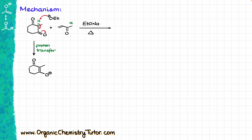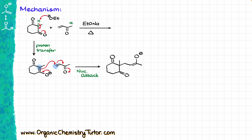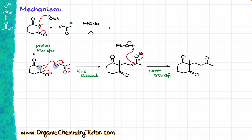This enolate is a perfect Michael donor, so we are going to bring our alpha-beta unsaturated compound and have a reaction between them. My nucleophile, which is my enolate, does the conjugate addition to my alpha-beta unsaturated compound, making a new bond between the carbon between my carbonyls and the beta position of my alpha-beta unsaturated compound, giving me the following enolate intermediate, which we protonate with the ethanol from our first step — also our solvent — giving us the following carbonyl as the product of this step.